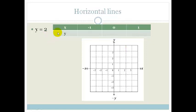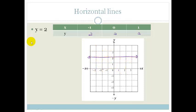Now let's look at the horizontal line. When x equals minus 1, y equals 2. When x is 0, y equals 2. And when x equals 1, y is 2. No matter what the x value is, y is always going to be straight across. So now you've covered y equals mx plus c, the gradient m, the intercept c, the dual intercept method, and the gradient intercept method, plus horizontal and vertical lines.